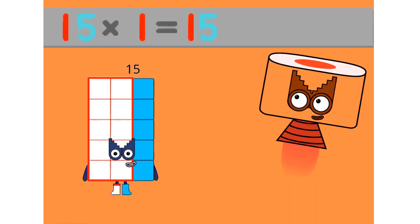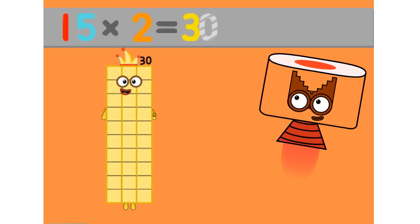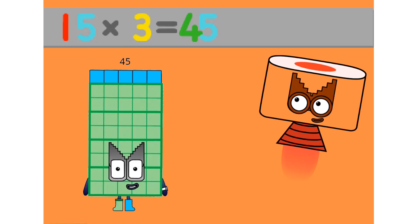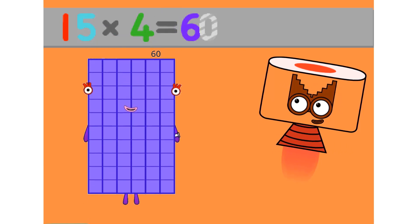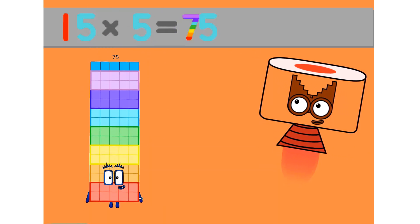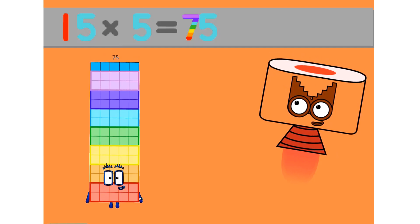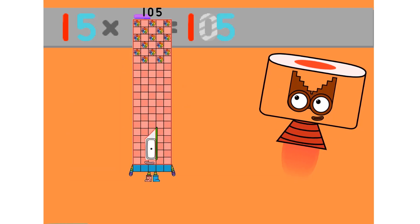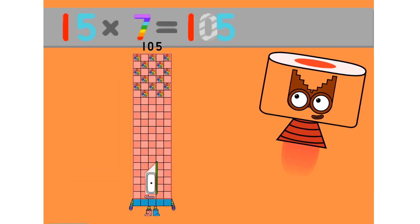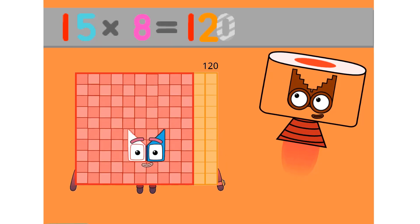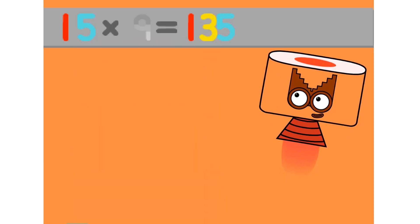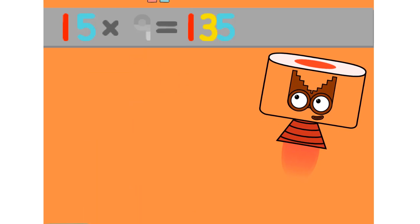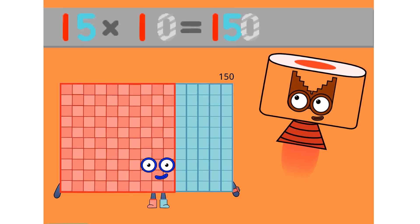15 times 1 equals 15. 15 times 2 equals 30. 15 times 3 equals 45. 15 times 4 equals 60. 15 times 5 equals 75. 15 times 6 equals 90. 15 times 7 equals 105. 15 times 8 equals 120. 15 times 9 equals 135. 15 times 10 equals 150.